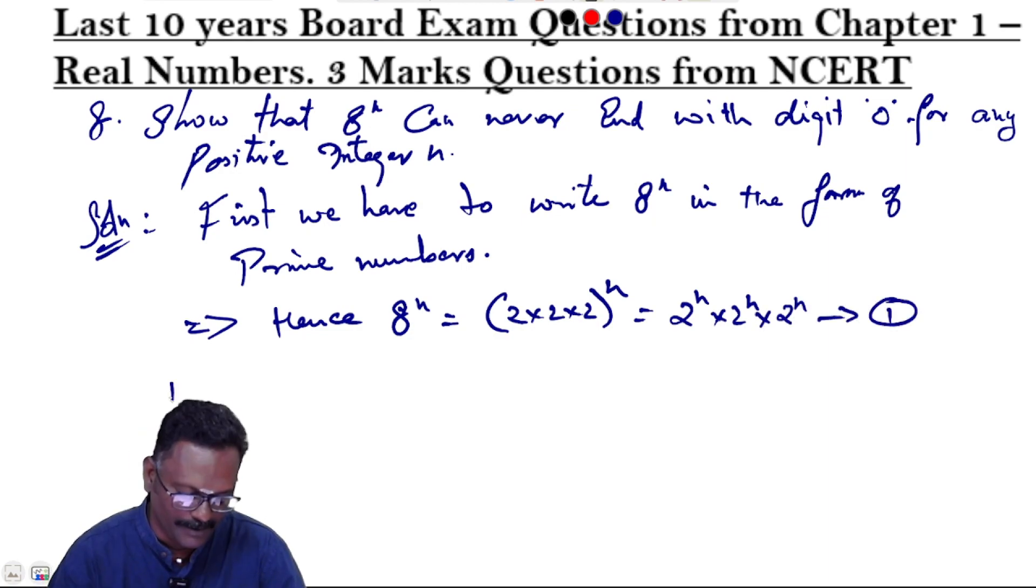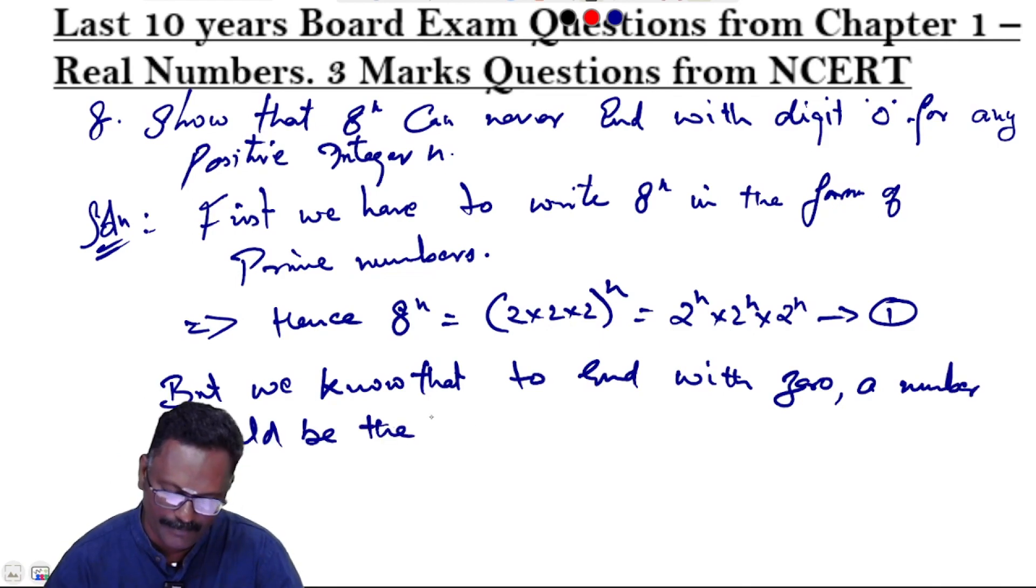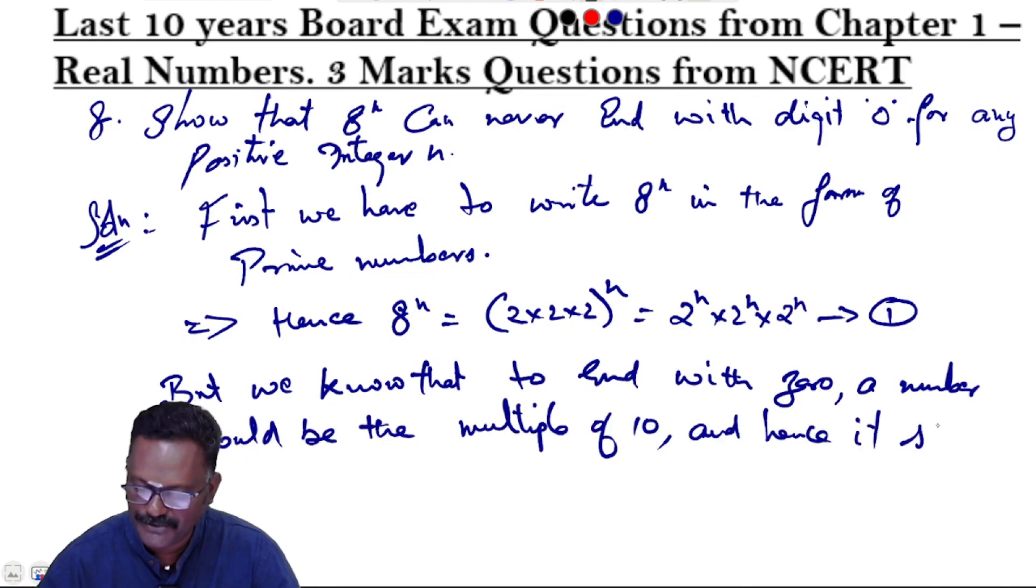The equation. But, we know that to end with 0, a number should be the multiple of 10. It should be the multiple of both 2 and 5.